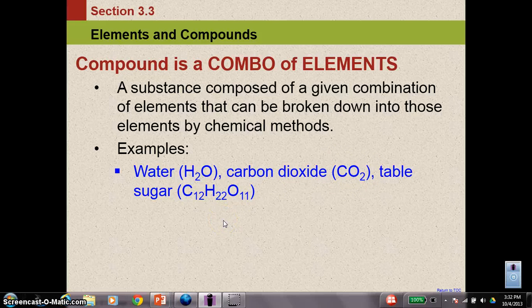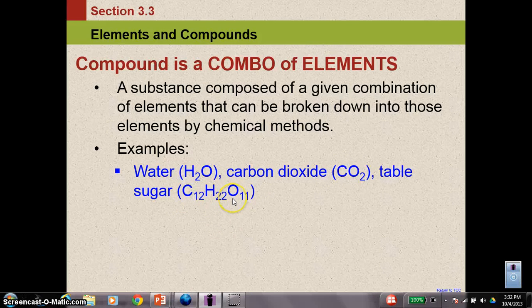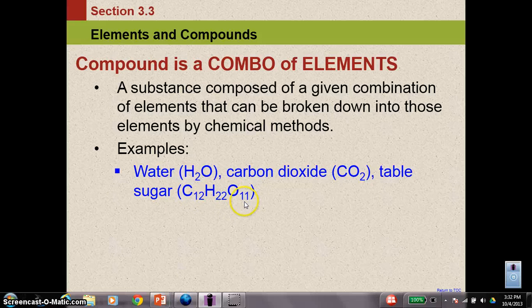Table sugar is a more complicated compound that has a lot more than just two or three elements in it. It has 12 carbon, 22 hydrogen, and 11 oxygen that are chemically bound together. These individual elements in this ratio are combined together chemically to form a compound.